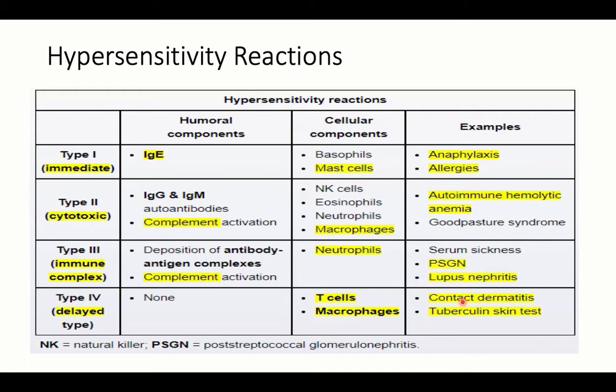Classic examples of type 4 delayed hypersensitivity include contact dermatitis — for example, a reaction developing when someone uses latex gloves or works with benzene or kerosene. The other classic example is tuberculin skin testing, where PPD is injected intradermally and read after 48 to 72 hours, looking for induration and measuring its diameter.